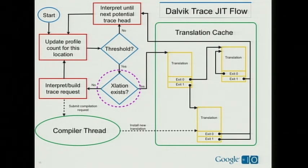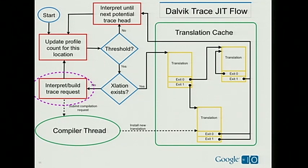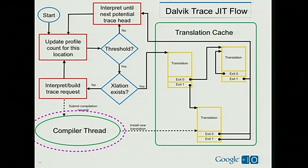The next question is: do I already have a translation for this address? If yes, execution is sent directly to that translation. If not, we go back to the interpreter in a special trace building mode — we essentially single-step the interpreter, and every time we successfully interpret an instruction, we add it to the list of instructions for that trace. How long we keep doing that is one of the tuning parameters in the JIT — basically how many branches you follow before the trace is terminated. At some point we decide the trace is long enough, terminate it, and send the request to the compiler thread. Meanwhile, the interpreter goes back to interpreting so you can continue making forward progress.